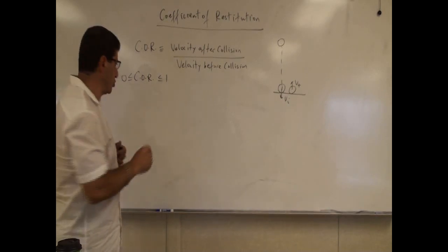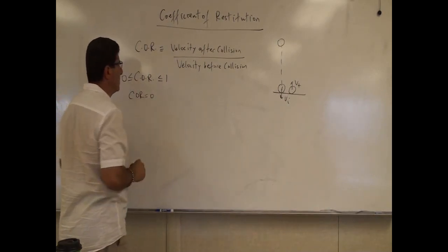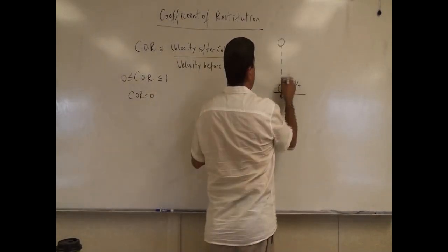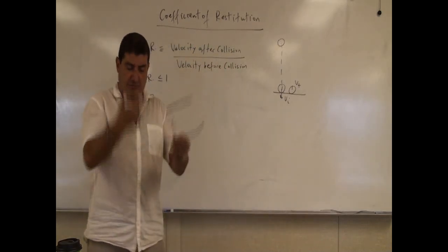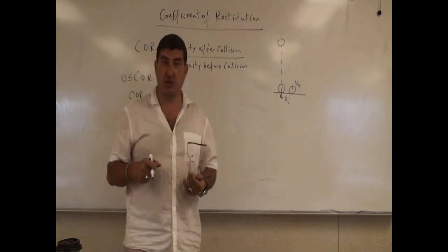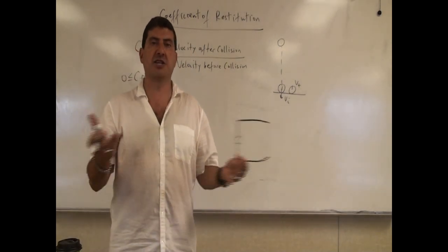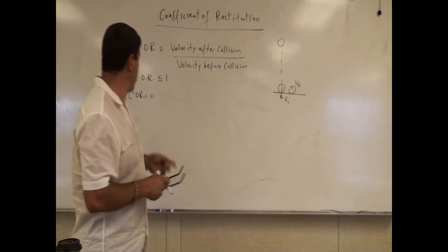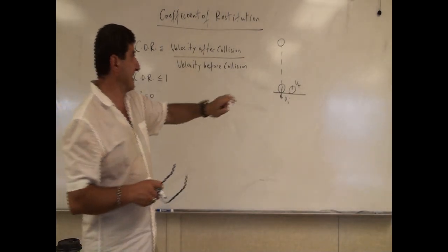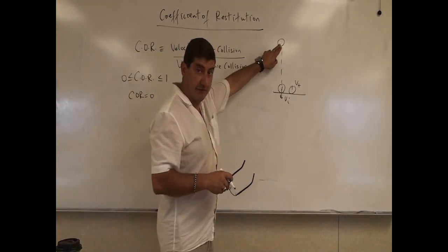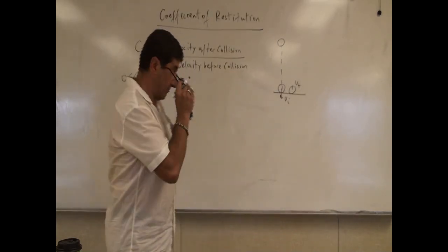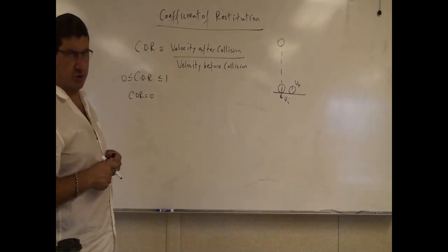What would happen if the coefficient of restitution is zero? The velocity after the collision would be zero. Imagine you drop a ball and it pretty much just stands still — all of the energy goes into the elastic deformation of the ball, heat, and sound, and it doesn't move at all. The coefficient of restitution also depends on the properties of the ball itself and the table or ground surface you're dropping it on.